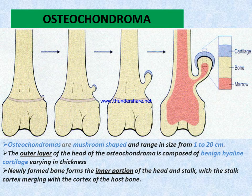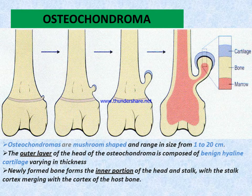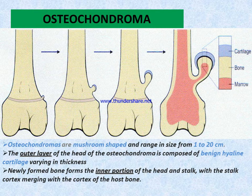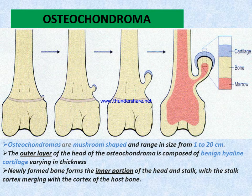Osteochondroma is mushroom-shaped and ranges in size from 1 to 20 centimeters. The outer layer of the head of osteochondroma is composed of benign hyaline cartilage varying in thickness. Newly formed bone forms the inner portion of the head, with the stalk cortex merging with the cortex of the host bone.